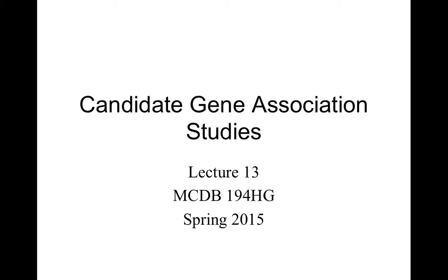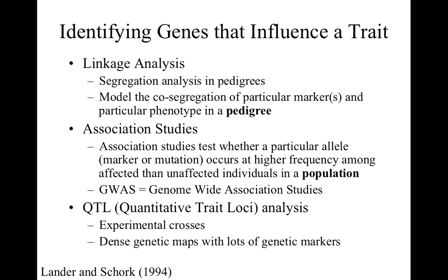Today, we will learn about one simple type of association study: a candidate gene association study. As mentioned last week, one of the main research areas in modern human genetics is to identify genes that contribute to or influence a complex trait. With each of these techniques, the general idea is to look for co-segregation of a specific marker or mutation with the affected phenotype. Linkage analysis does this in pedigrees; association studies does this in the total population.